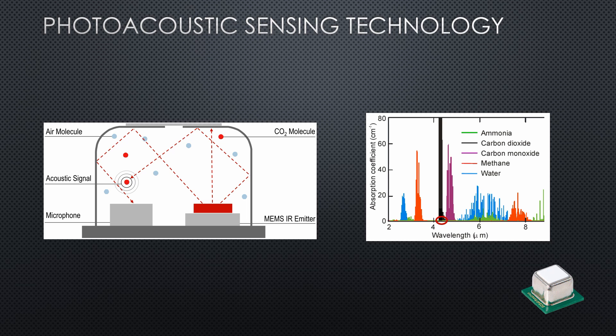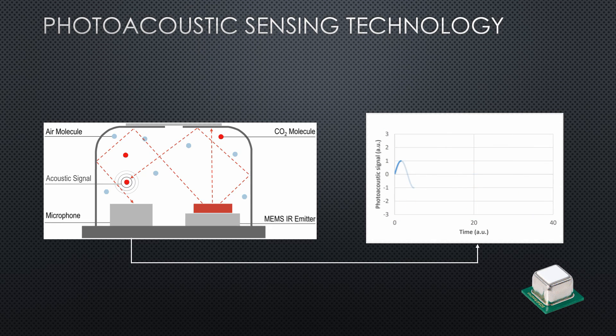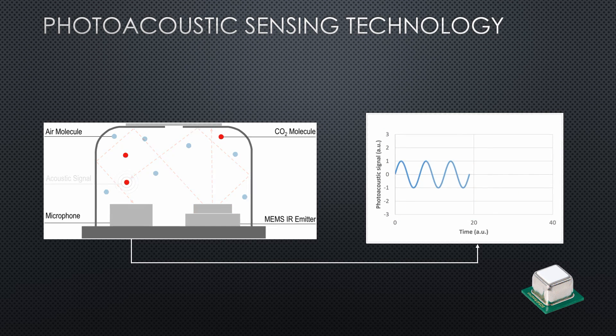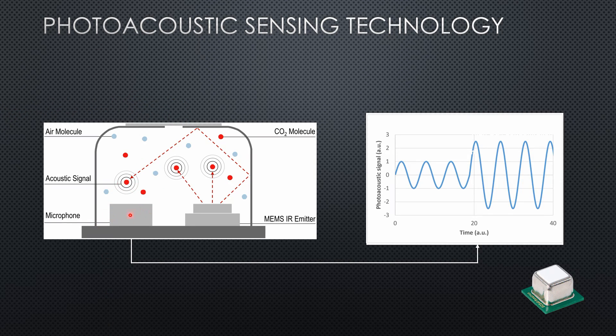The IR light is modulated. Now the pressure increases and reduces with the frequency of the modulation. A microphone can measure this sound and determine the amount of CO2 molecules in this small room. Cool.